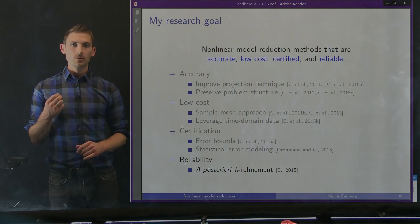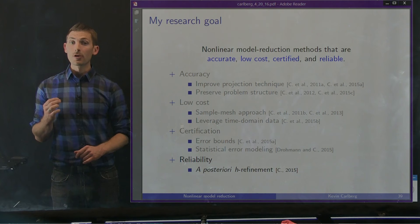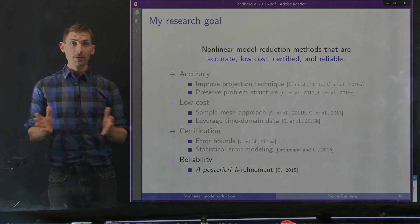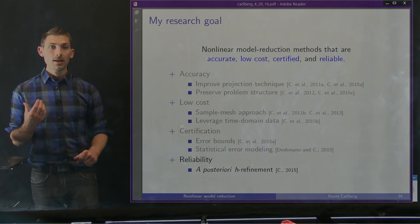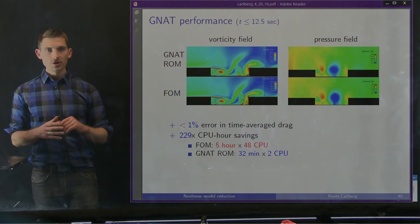For the next part of my talk I'm going to discuss reliability. In particular, we would like to ensure that our reduced order model always works regardless of how good our training data is. This is a very hard problem, but if successful it will open up the possibility of reduced order models working on a much wider class of problems where typical low dimensional subspace assumptions fail. This is what we're going to call a posteriori h-refinement for reduced order models.